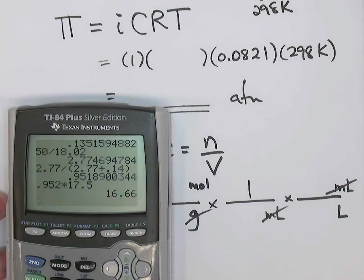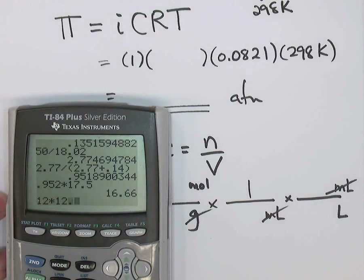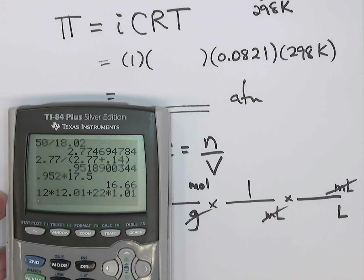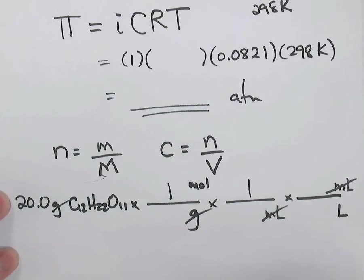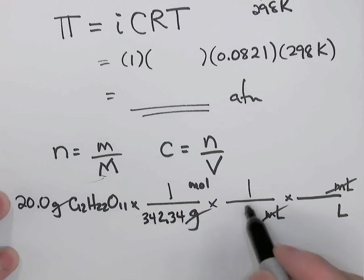So one mole of sucrose. Let's calculate that molar mass. We have 12 times 12.01, 12 carbons, 22 times 1.01, 22 hydrogens, and 11 times 16, 11 oxygens. So 342.34 grams per mole. There were 50 milliliters of solution. And there's 1,000 milliliters per liter.